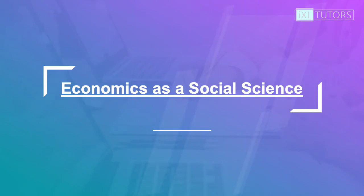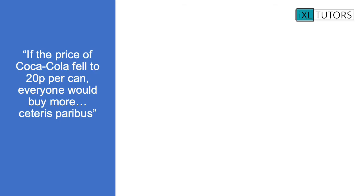Let's start to have a look at the first topic in economics: economics as a social science. Here's a question to think about — if the price of Coca-Cola fell to 20 pence per can, would everyone buy more, ceteris paribus? The term ceteris paribus means all other things remaining equal.